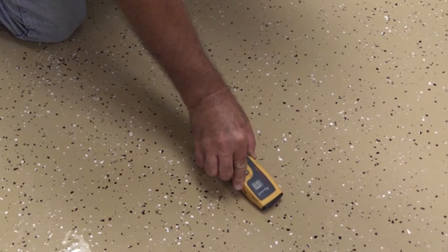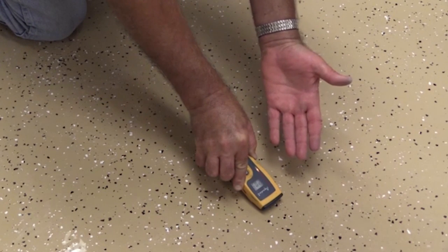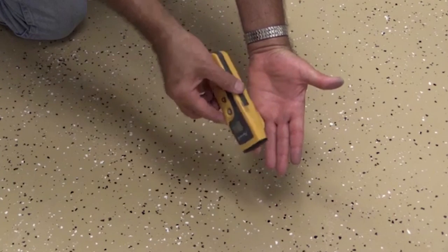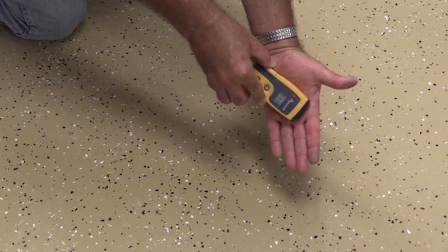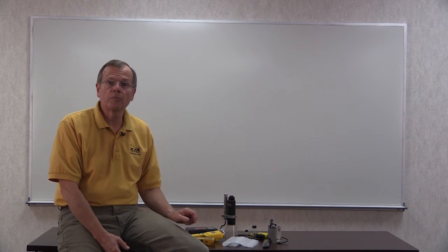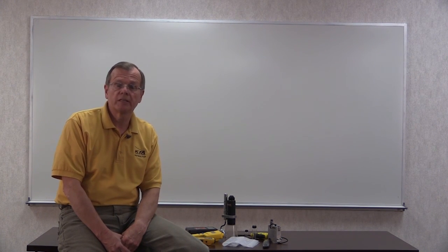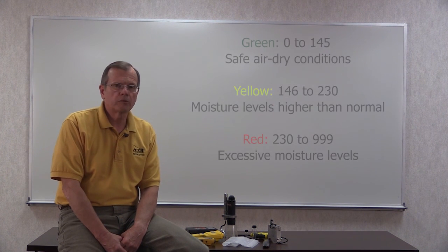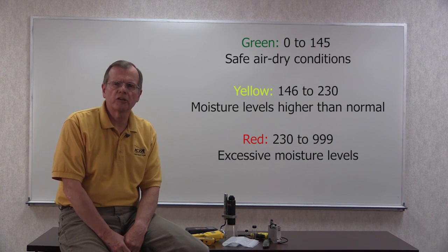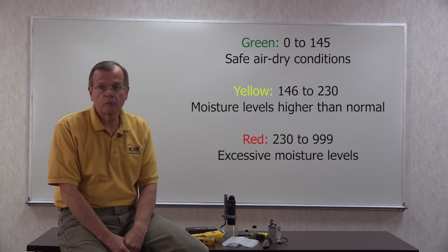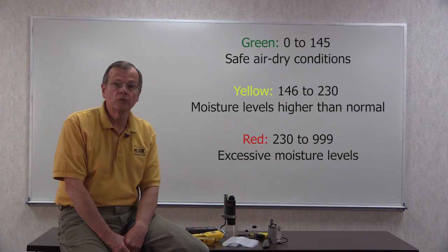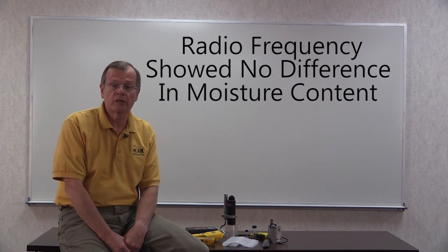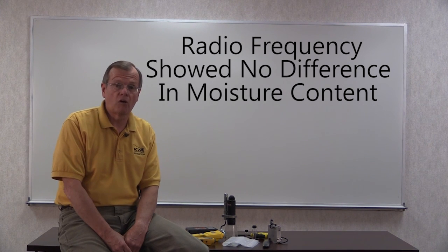We're getting a reading on this floor and it's relatively dry, but I can take my hand, which has a lot of moisture in it, put the meter on my hand and it will pick up the moisture. Notice how it gets a steady beep when it's actually detecting high quantities of moisture. The instrument reads through the paint and provides the relative moisture content in the top three-quarter inch of the surface. Green is zero to 145 units — safe, air dry conditions. Yellow is 146 to 230 — moisture levels higher than normal. Red is 230 to 999 — excessive moisture levels. In this case, no differences were seen between the moisture content of intact and problem areas; all were in the low two-hundredths.